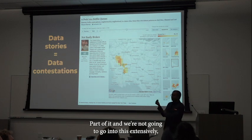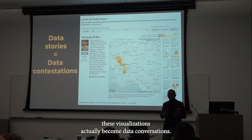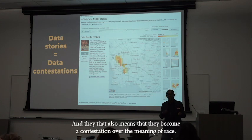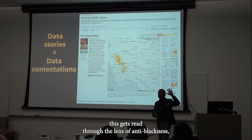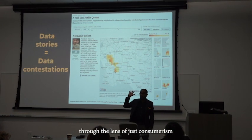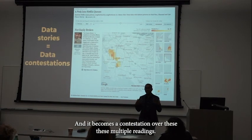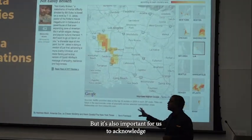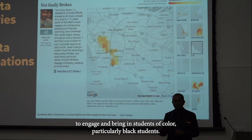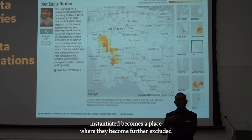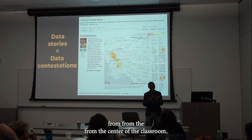The reason I want to bring this up is that these data stories, these visualizations, actually become data contestations — and that means they become contestations over the meaning of race. Within that classroom, this gets read through the lens of anti-blackness, through the lens of consumerism, and the lens of racial solidarity. It's also important to acknowledge that this project was grounded in the commitment to engage and bring in students of color, particularly Black students. And yet the moment it's instantiated becomes a place where they become further excluded from the center of the classroom.